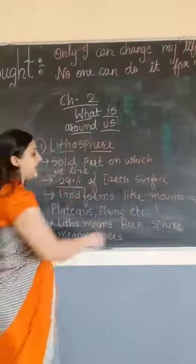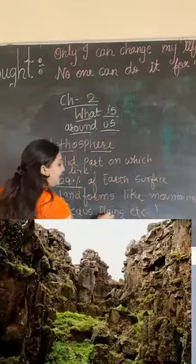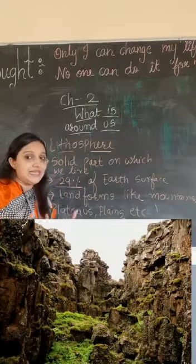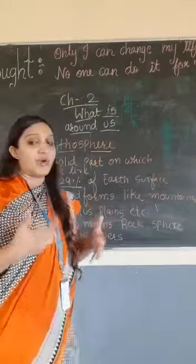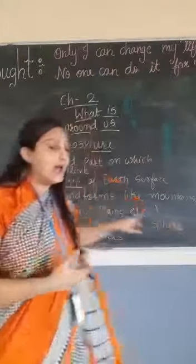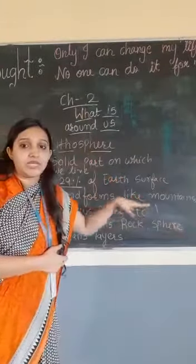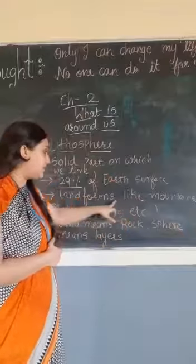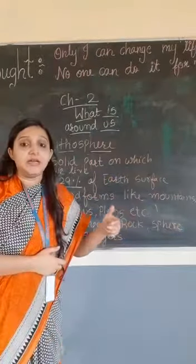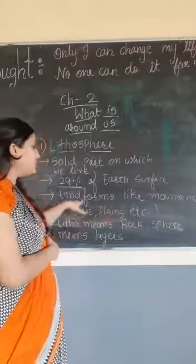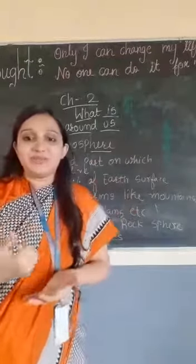Landforms like mountains, plateaus, plains, valleys, hills, etc. are made up of rocks and are solid substance. All these landforms are solid substance, so they come under lithosphere.